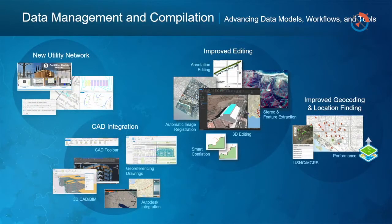The core part of a GIS is data management and compilation. We're advancing data models — for example the new utility network model — and adding new workflows and tools improving editing, such as new stereo feature extraction directly in Pro and the ability to automatically register new imagery using the global imagery background. New tools include tools for CAD integration, registering CAD drawings in a GIS, and interoperability between CAD and BIM environments, and we're working closely with our colleagues at Autodesk Corporation.